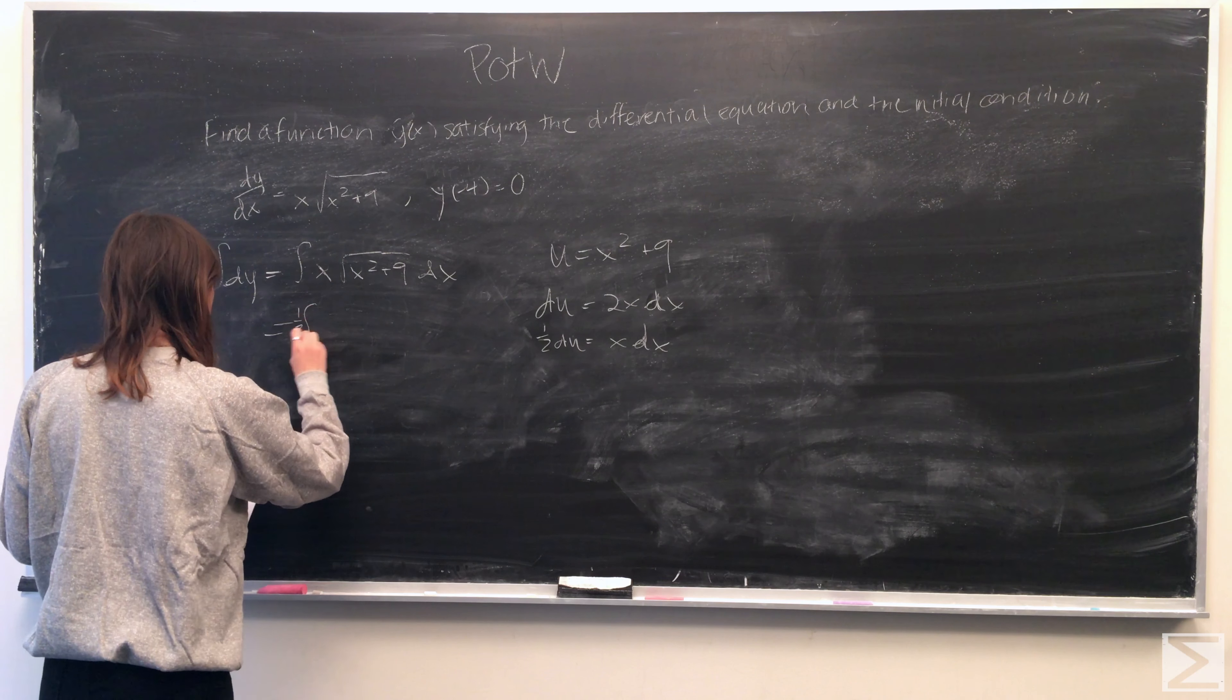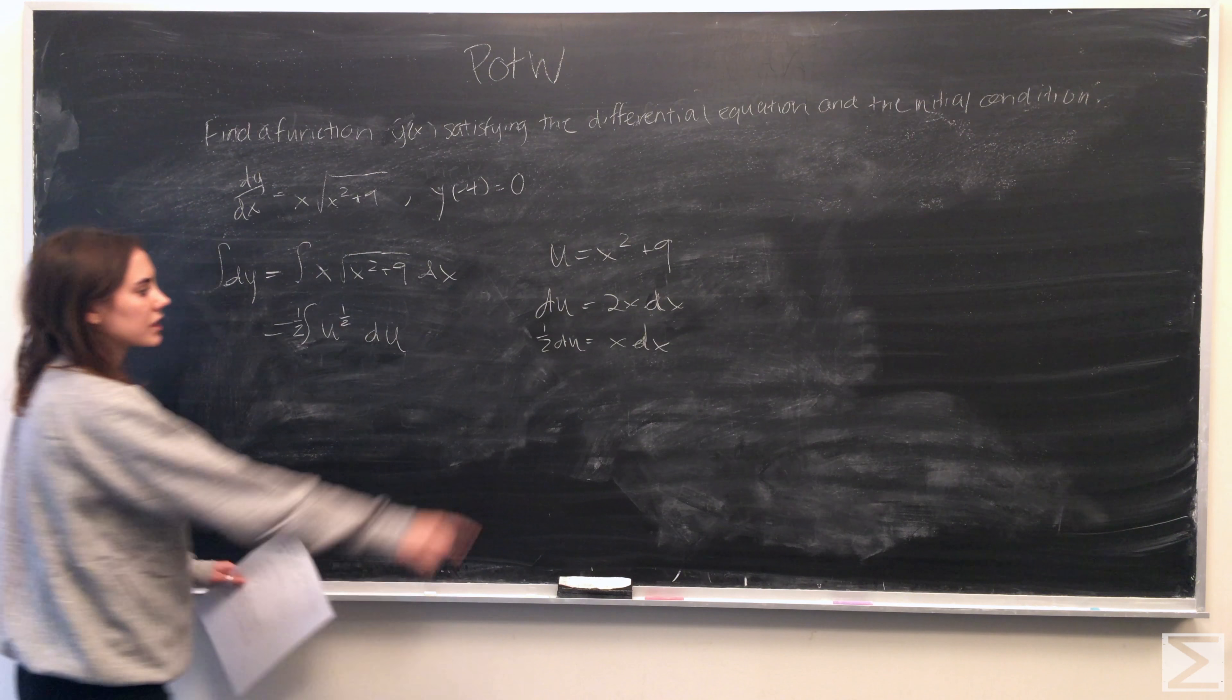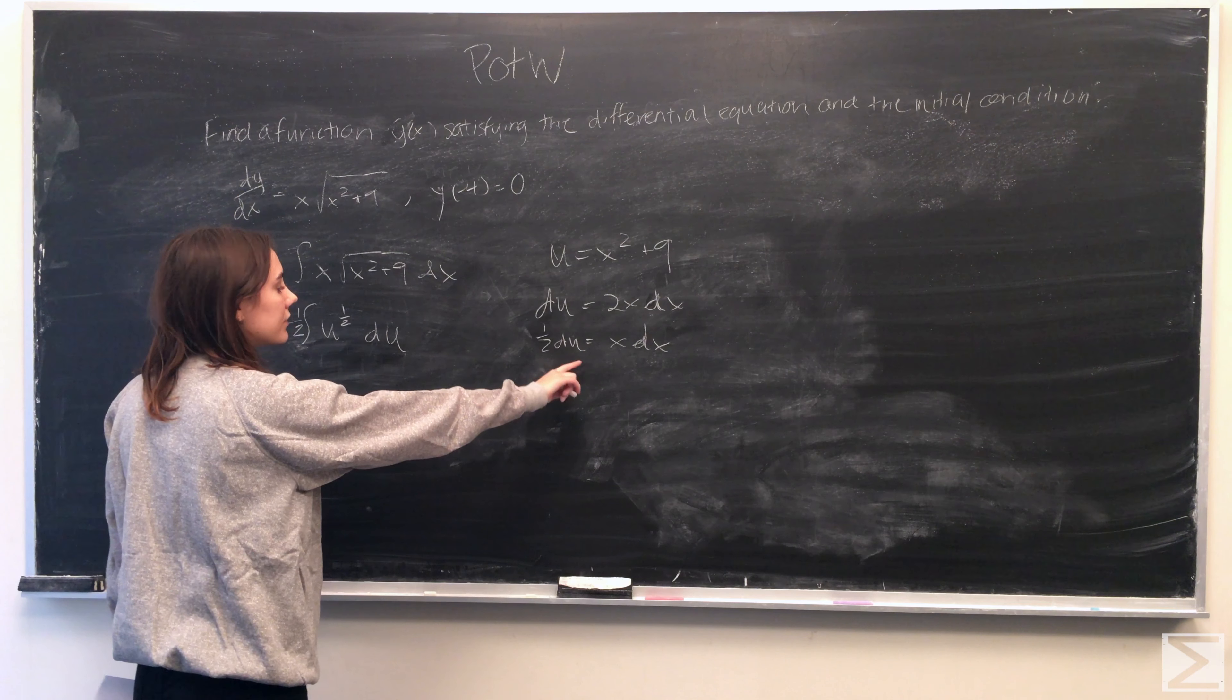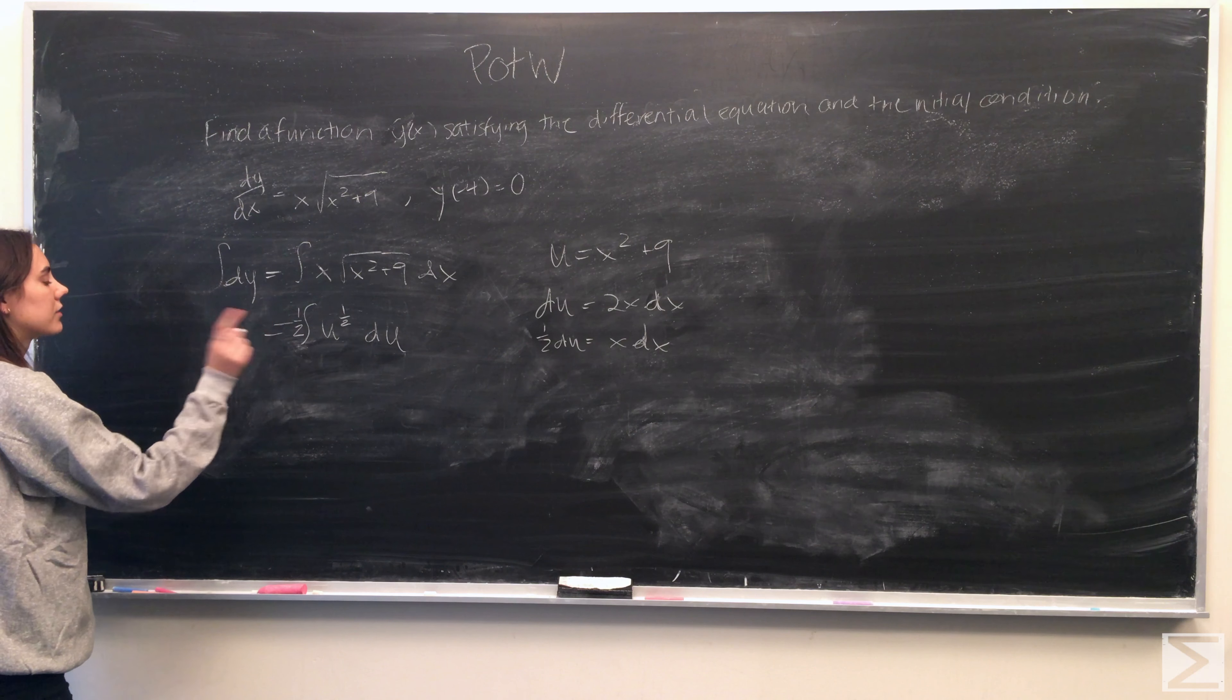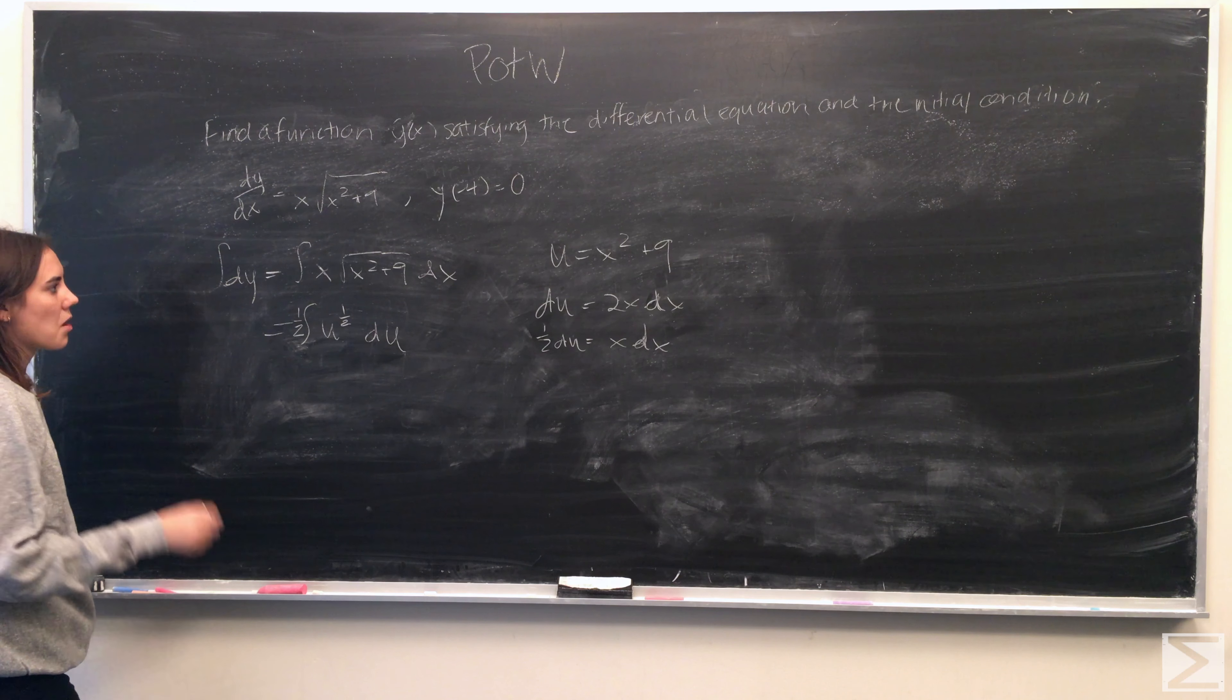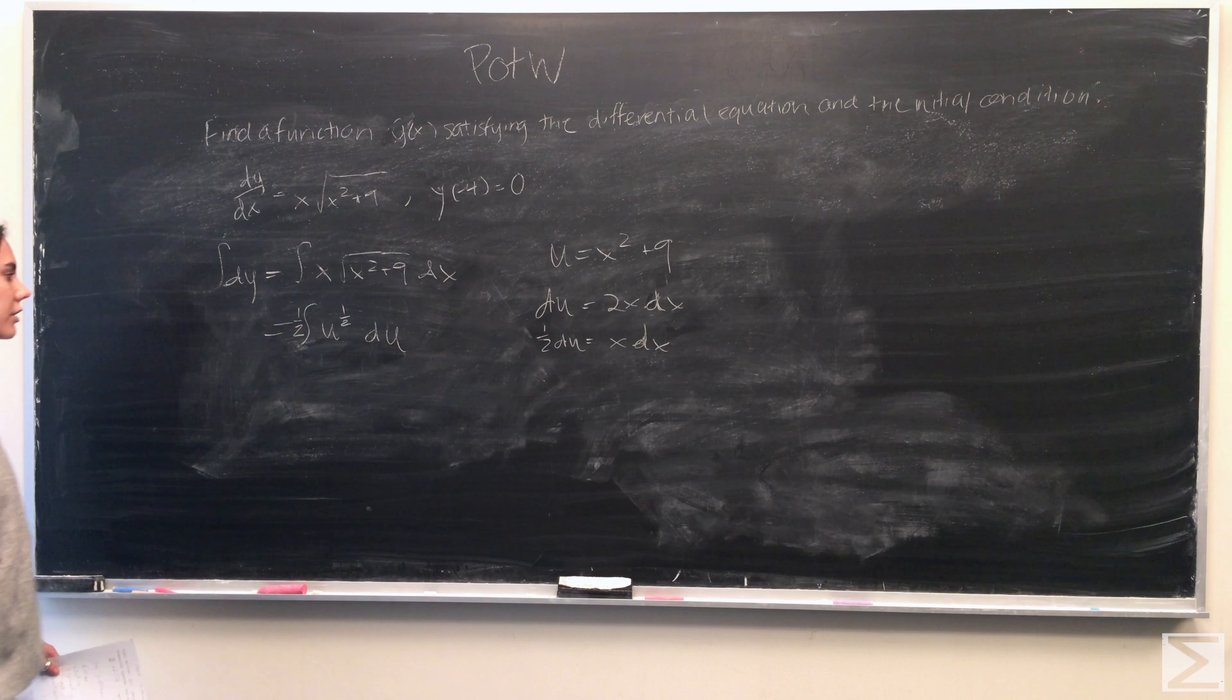Now, substituting those in, what we get is pulling out this 1 half of the 1 half du on the outside of the integral. We get 1 half times the integral of u to the 1 half from the square root du. And this is a pretty simple integral to solve.